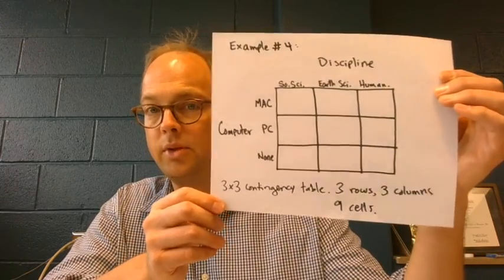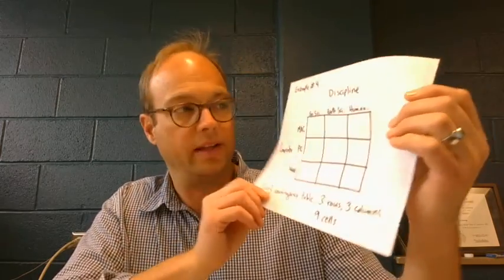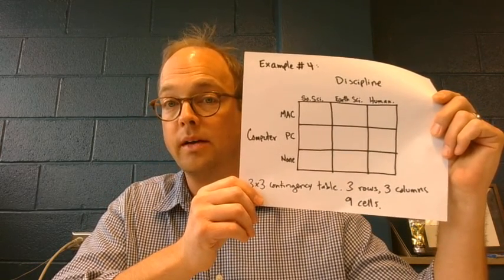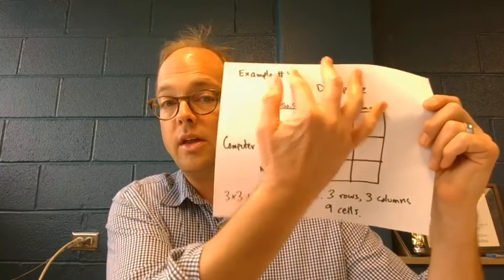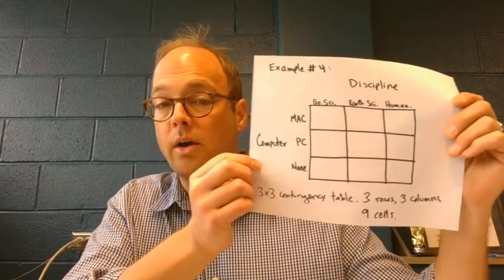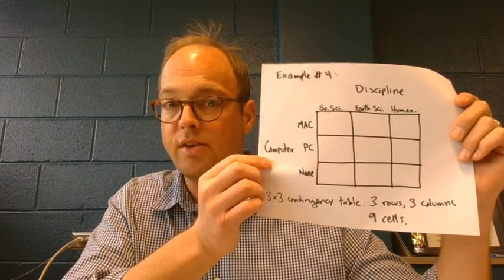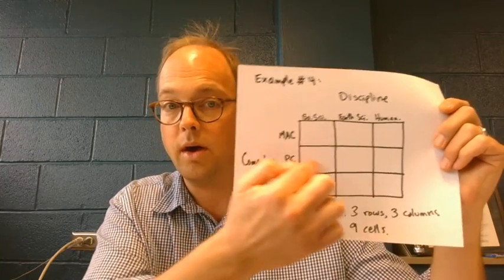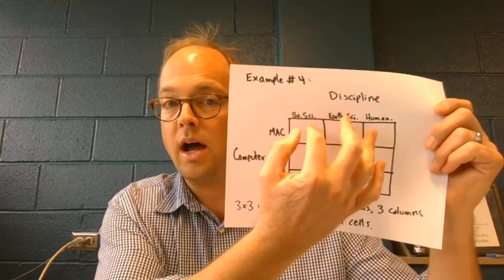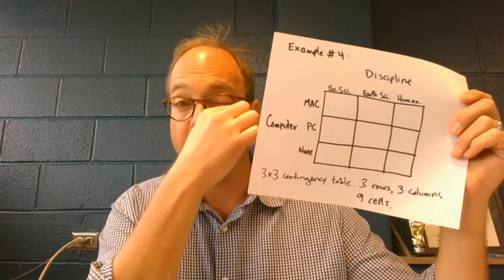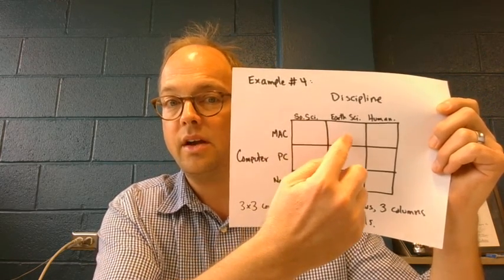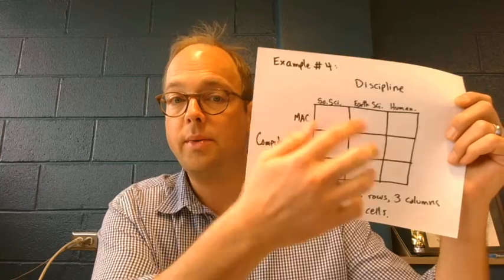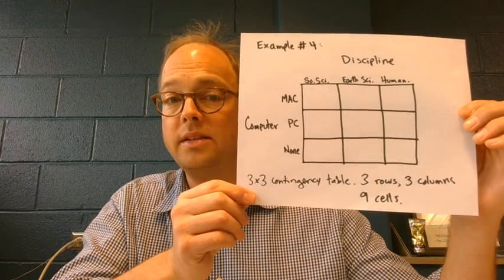What would that look like as a contingency table? It would look like this. It's considered square because we have the same number of rows as columns — three rows, three columns. The three rows represent the variable called computer use: Mac user, PC user, no user. The columns represent the variable called discipline: social scientists, earth scientists, humanities. So three rows, three columns — this is referred to as a three by three contingency table.